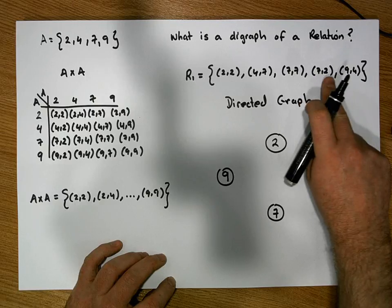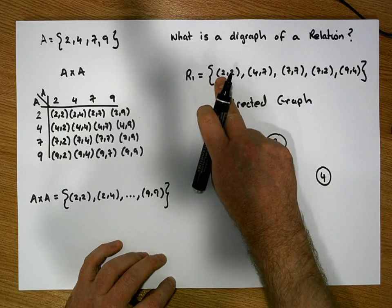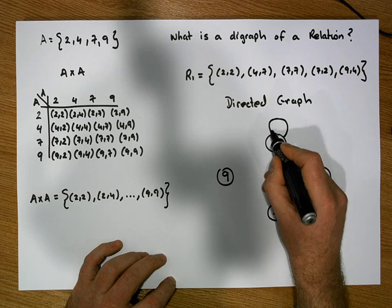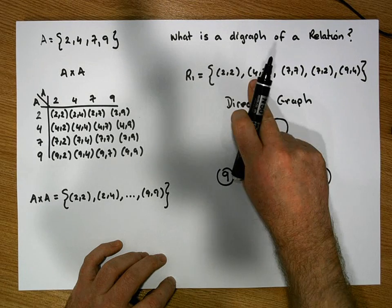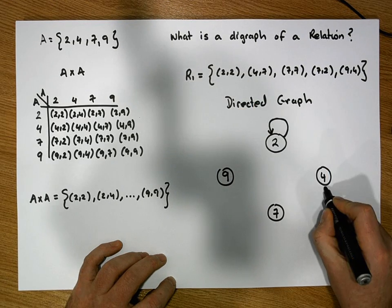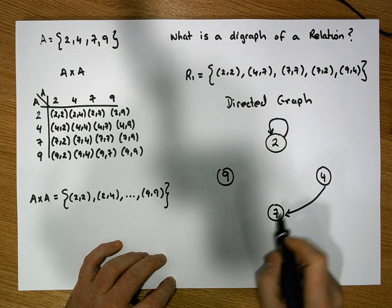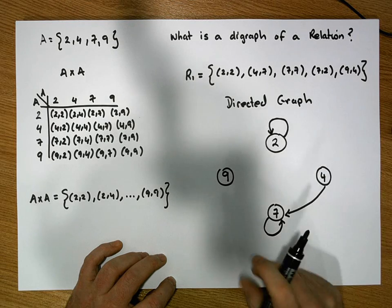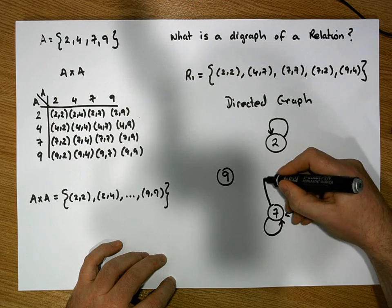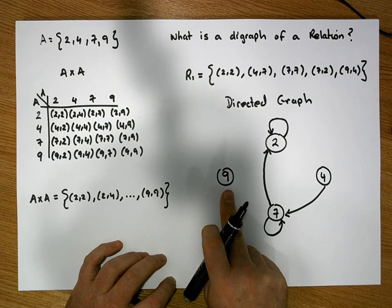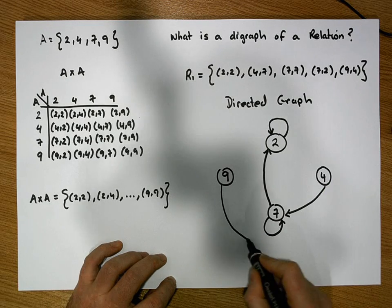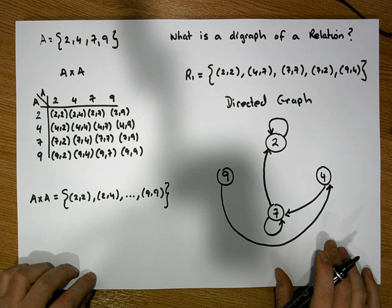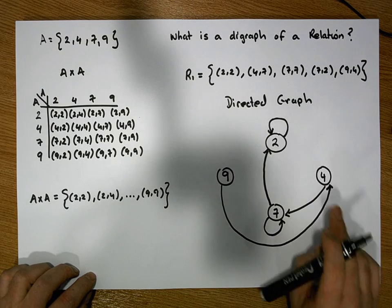For each ordered pair in the relation, we put in a directed edge from the domain value to the range value. The ordered pair (2,2) is a self-loop from node 2 into itself. The ordered pair (4,7) is a directed edge from node 4 to node 7. The ordered pair (7,2) is a directed edge from node 7 to node 2. And (9,4) is a directed edge from node 9 to node 4.